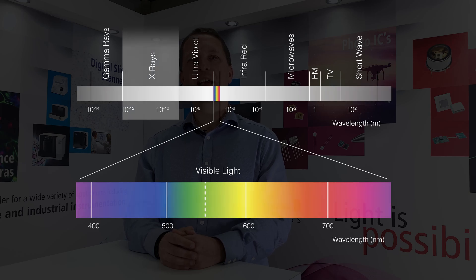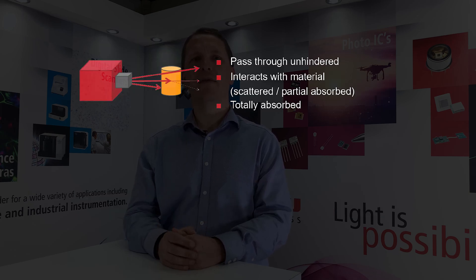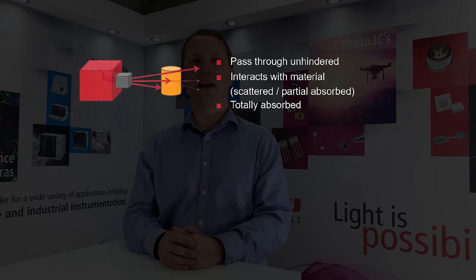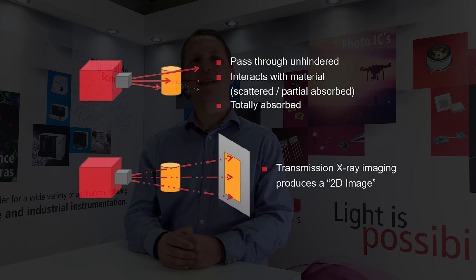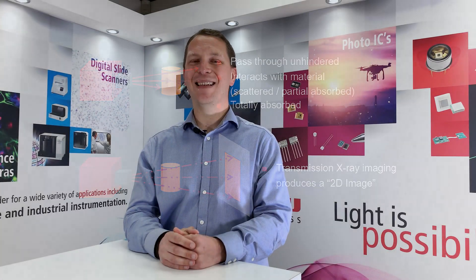X-Rays come from a section of the electromagnetic spectrum where the particles have enough energy to pass through a material without interaction. But actually this isn't so useful, so in reality we select X-rays of a certain energy that will be absorbed at different rates dependent on a material's density or thickness. It's this information that we collect in specialist X-ray detectors that allows us to form an X-ray image that many of you will be familiar with.